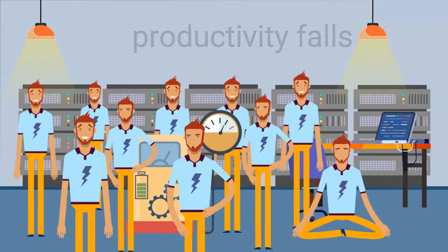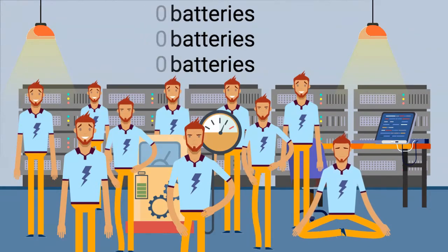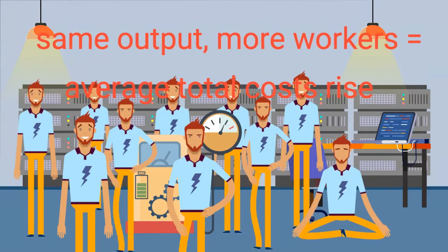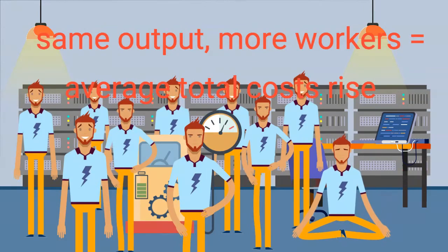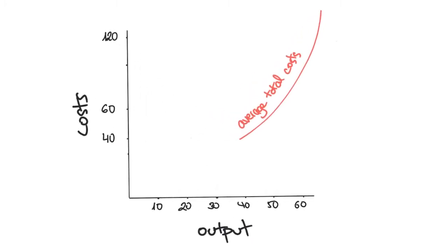As workers are also getting a salary, but output does not rise or even decreases, the more workers we hire after our third worker, the average total costs will start increasing. This is illustrated by this diagram, showing that the more we produce, the higher our costs of production are.